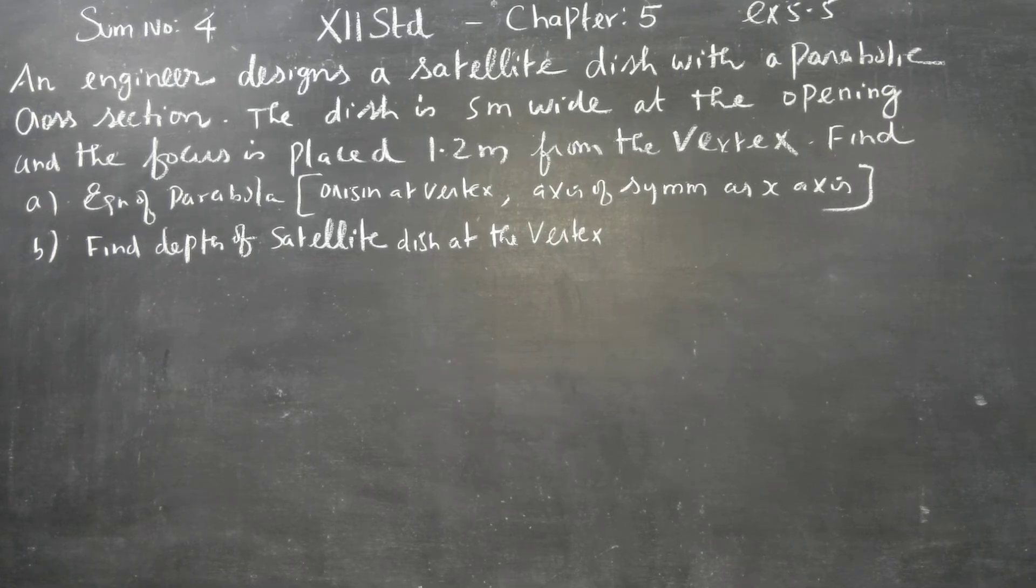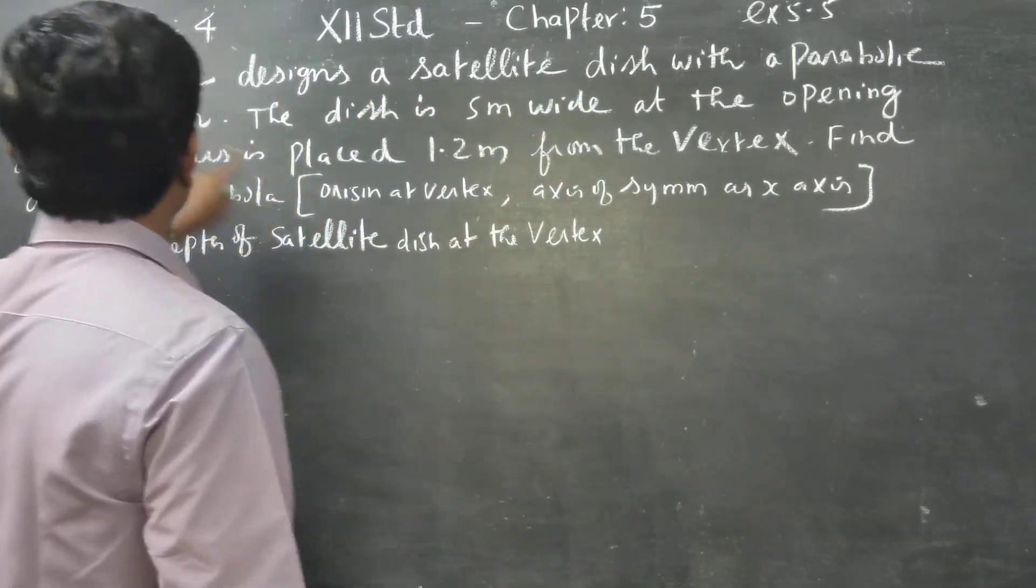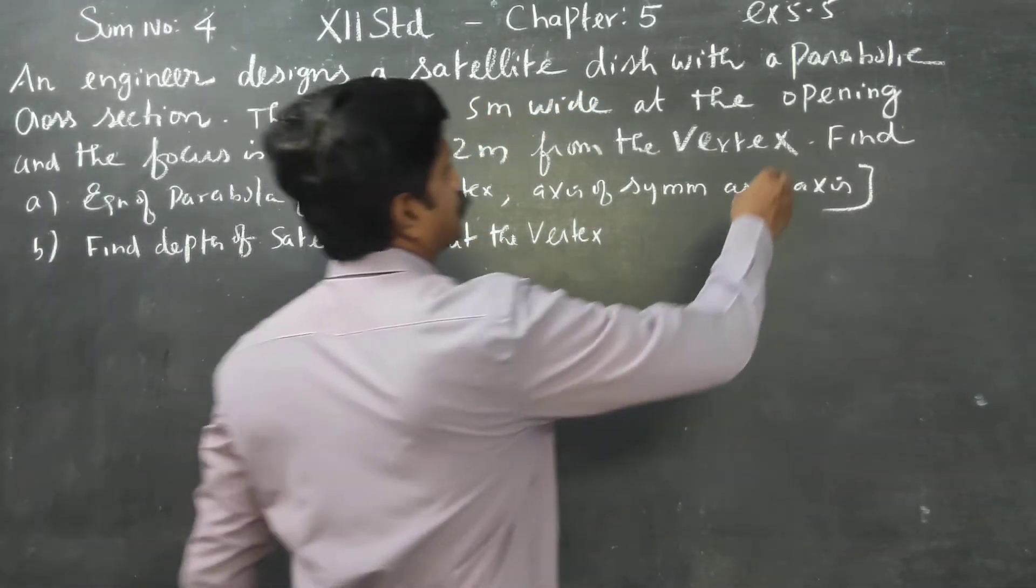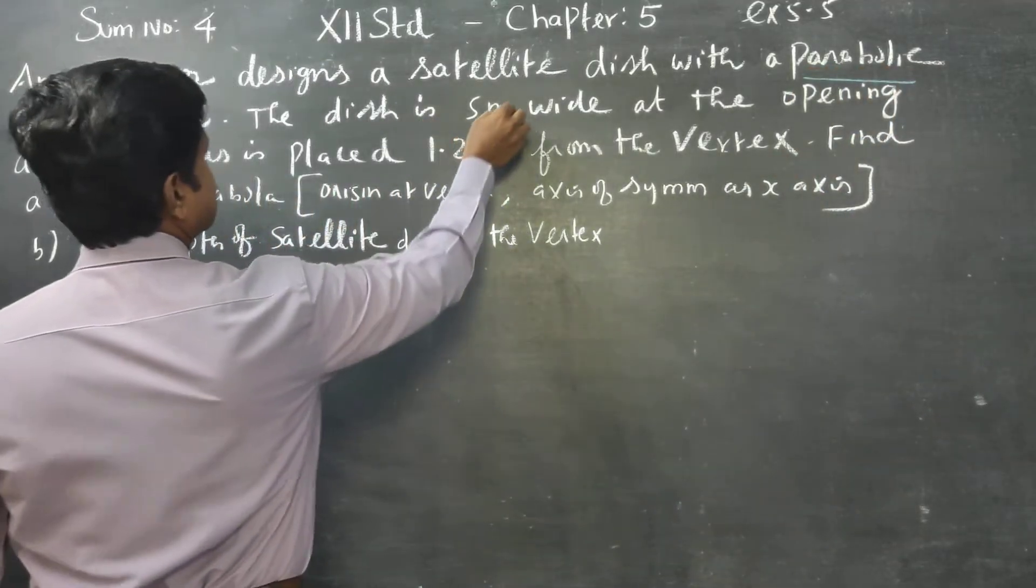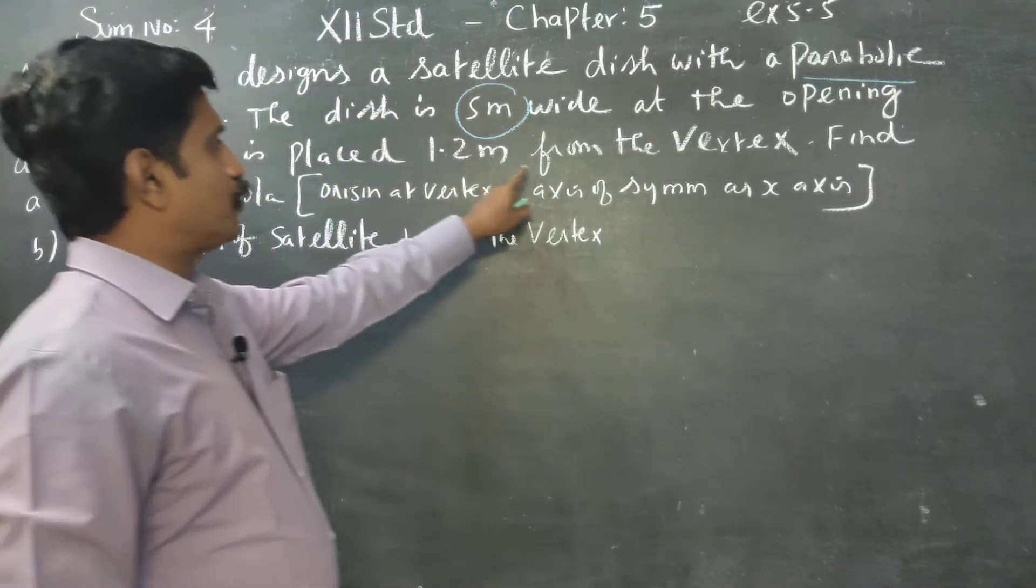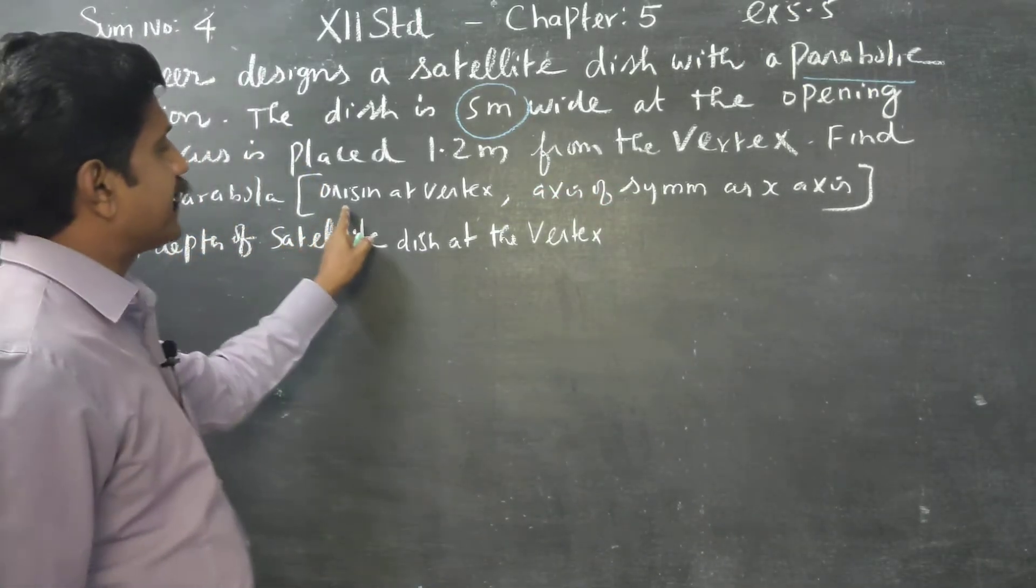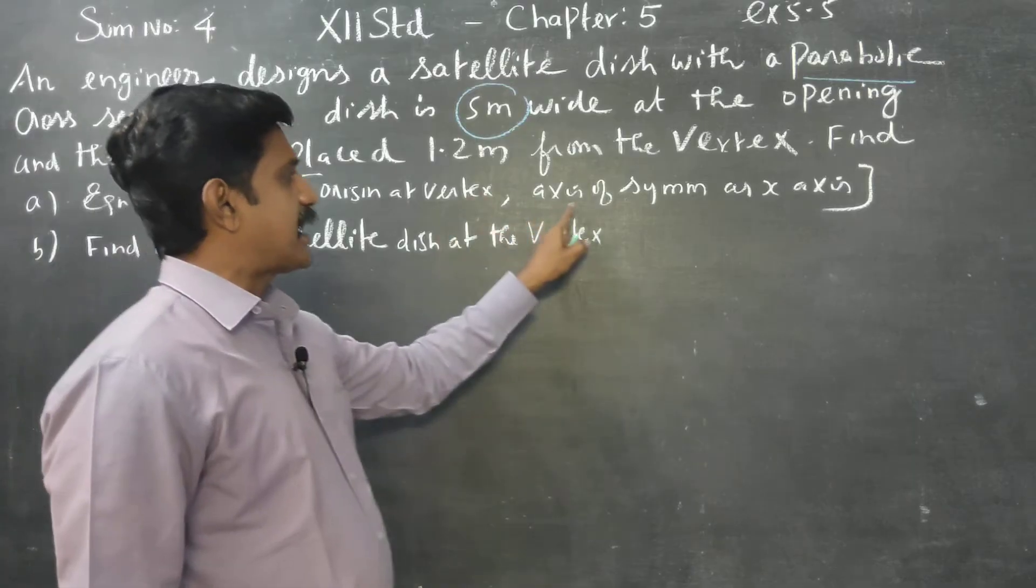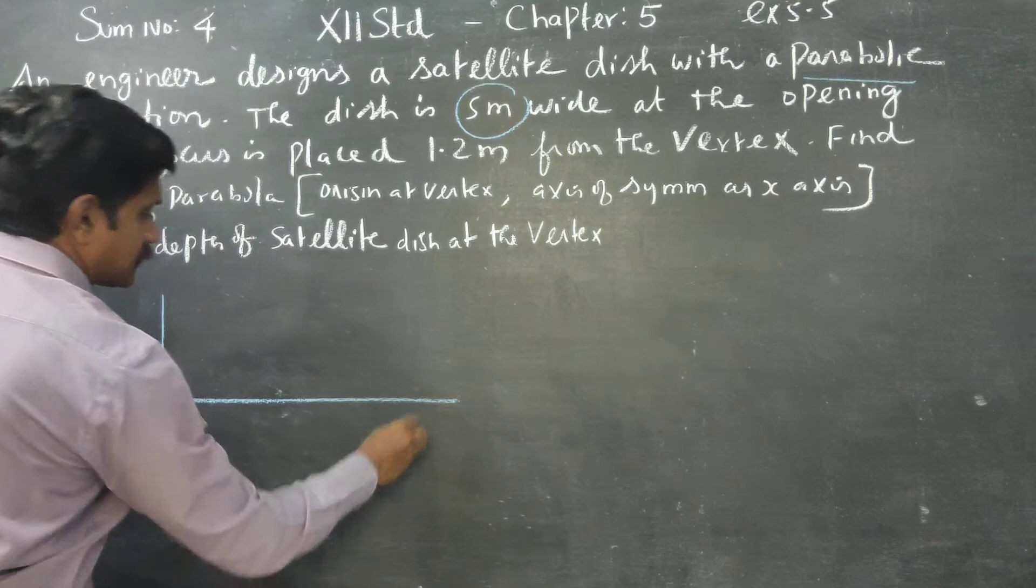Dear 12 standard students, in exercise number 5.5, an engineer designs a satellite dish with a parabolic cross-section. The dish is 5 meters wide at the opening and the focus is placed 1.2 meters from the vertex. To find the equation of parabola, some hints are given: origin at vertex, axis of symmetry as x-axis.